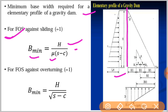In this formula, mu is the coefficient of friction, S is the specific gravity of the material of the dam, and C is the coefficient of uplift. The second factor to consider is the factor of safety against overturning.